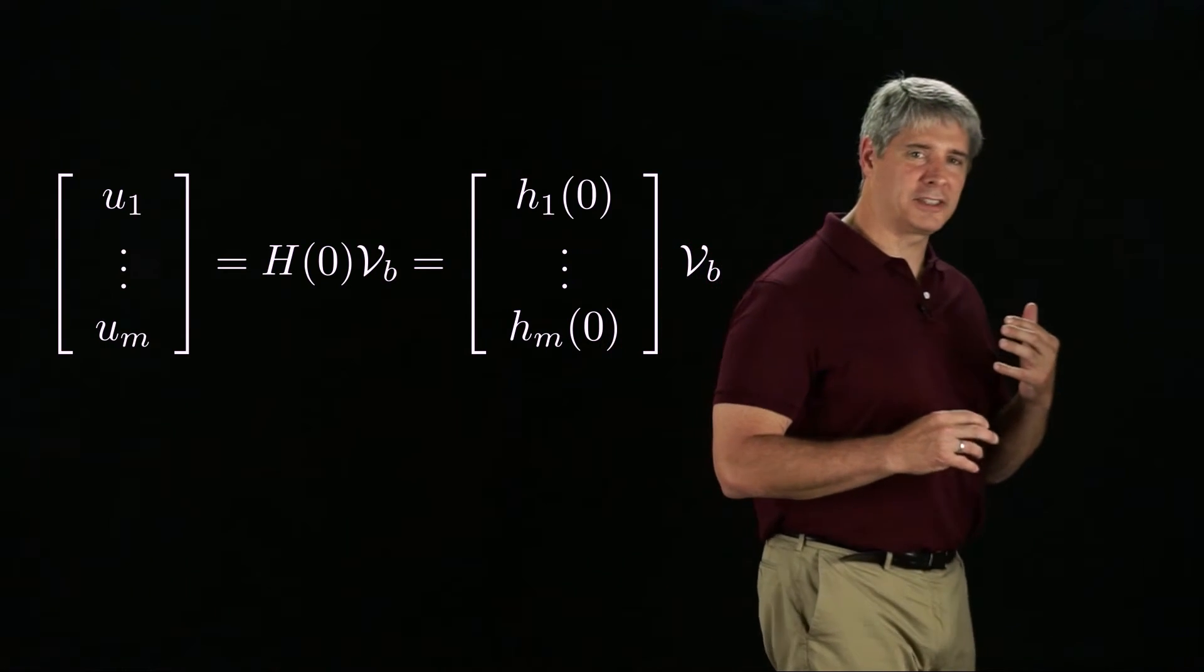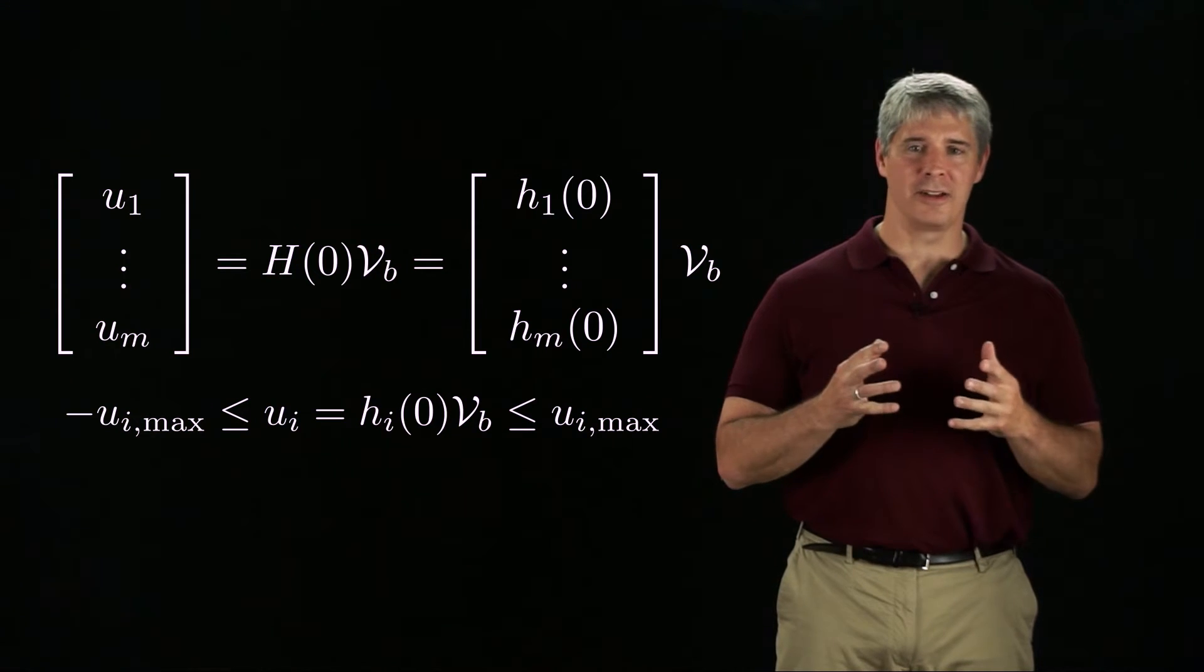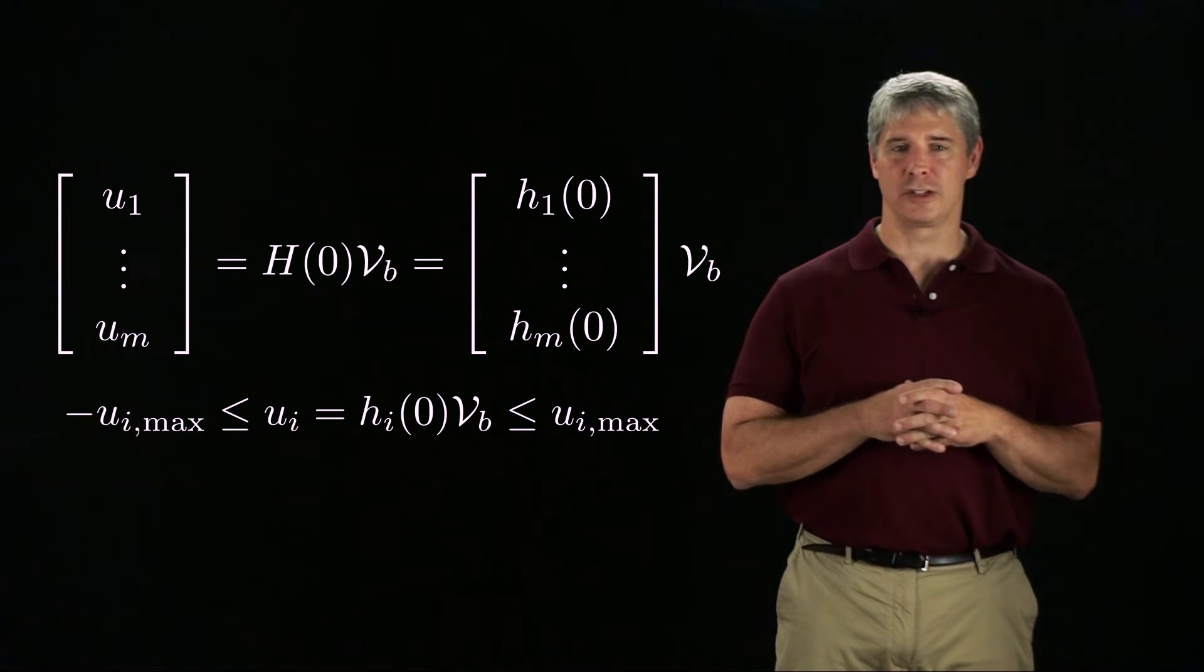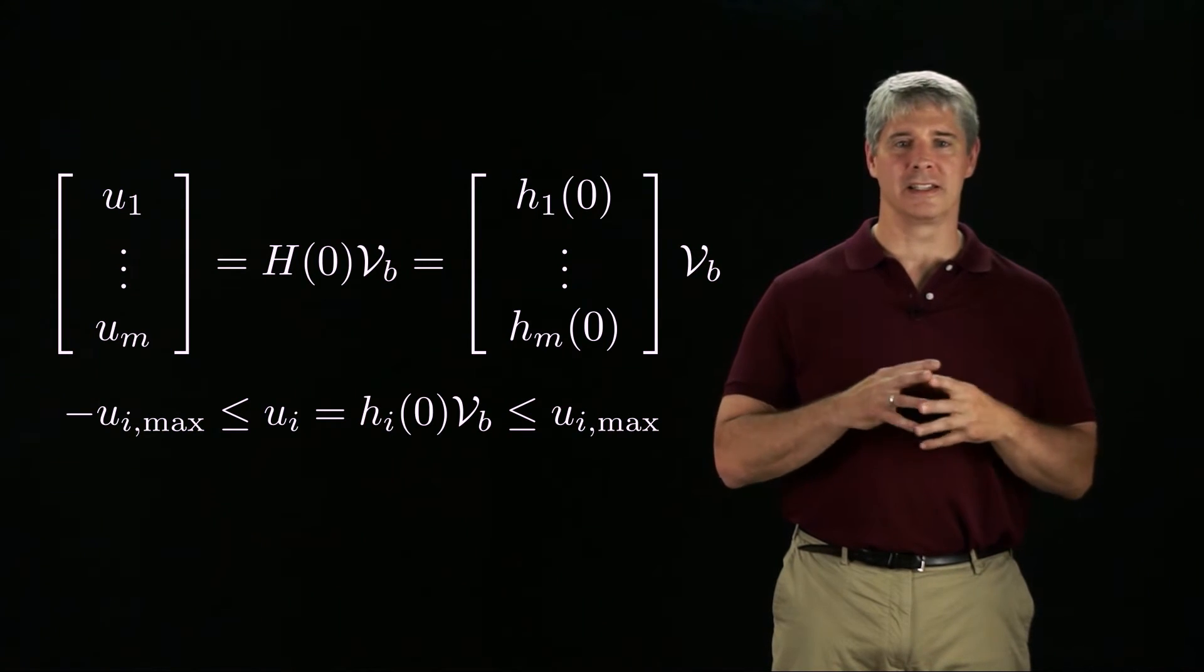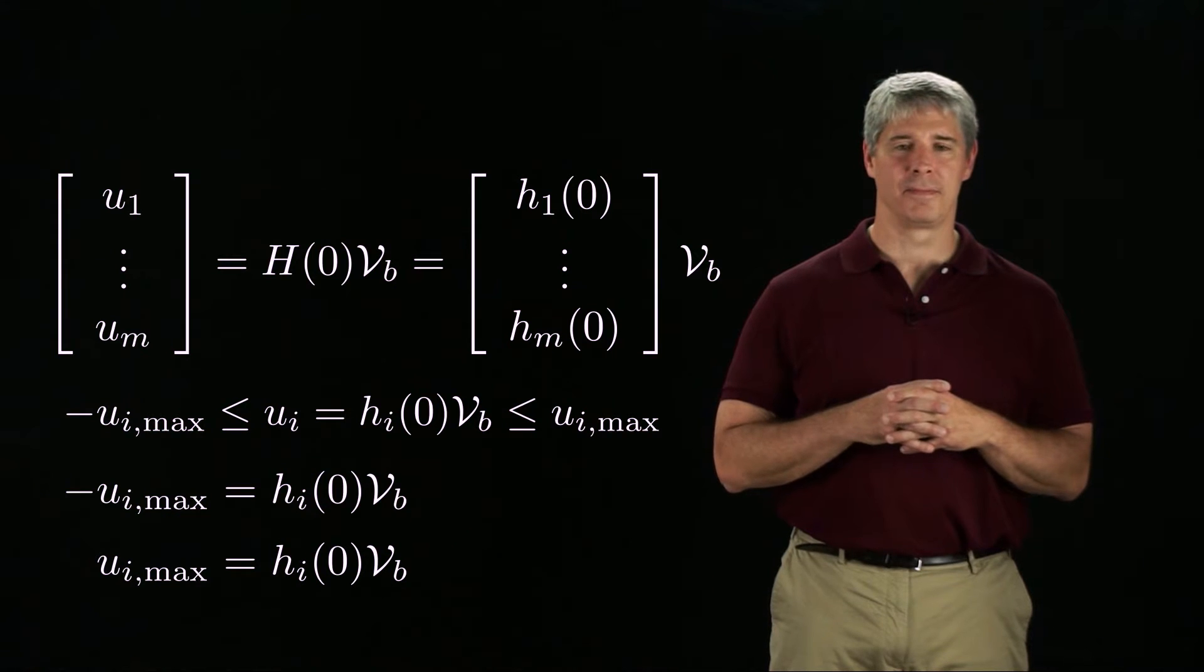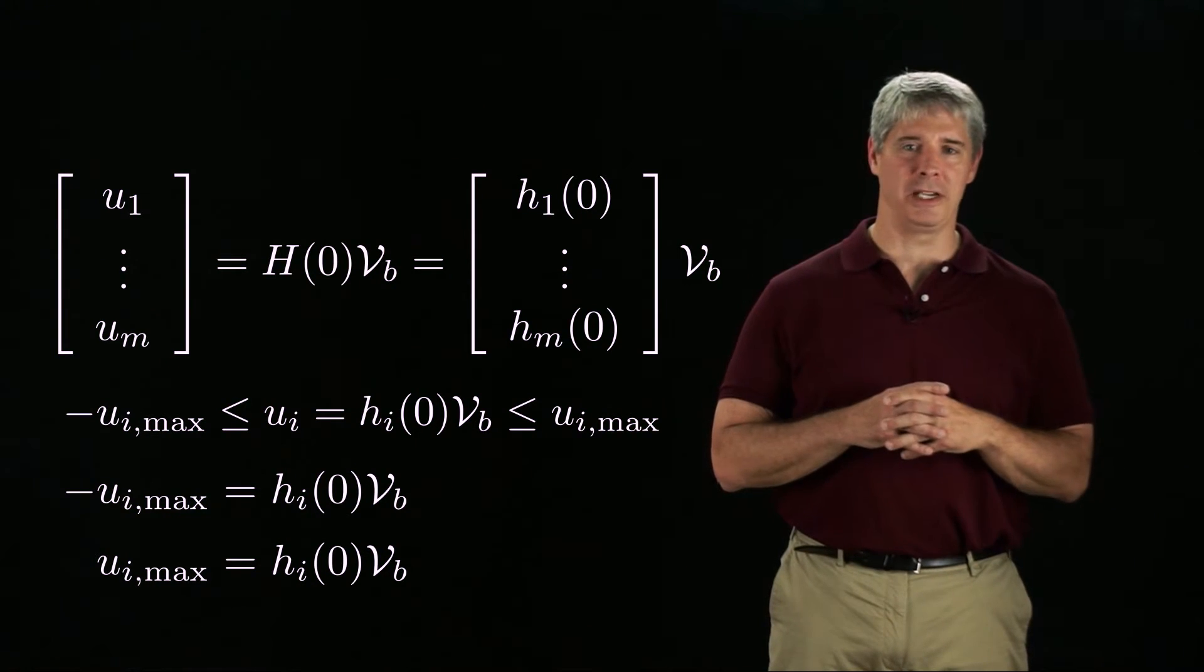Recalling the kinematic model expressed in terms of twists, bounds on the speed of wheel i create bounds on h_i of 0 times the twist v_b. These two bounds define two parallel planes in the twist space, given by these two equations. Any twist between these two planes satisfies the wheel speed bound.